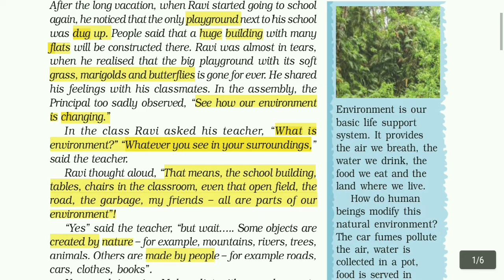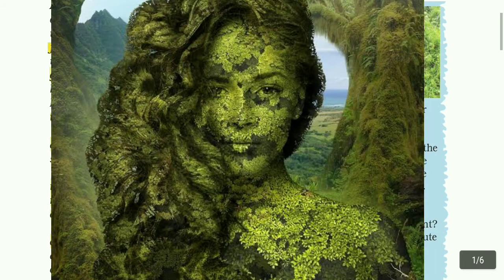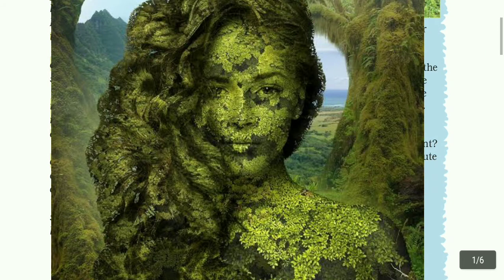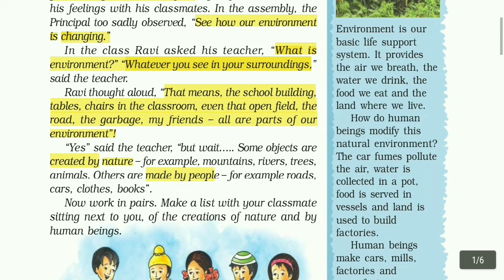Some objects are created by nature — for example, mountains, rivers, trees and animals. Others are made by people — for example, roads, cars, clothes, books.